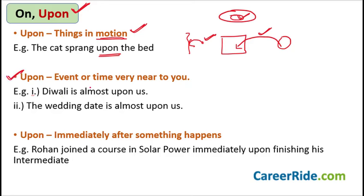'Upon' is also used before an event or a time when it is almost near to you. 'Diwali is almost upon us' means that Diwali is very near to us, it's almost there. 'The wedding date is almost upon us' — it is very near to you.